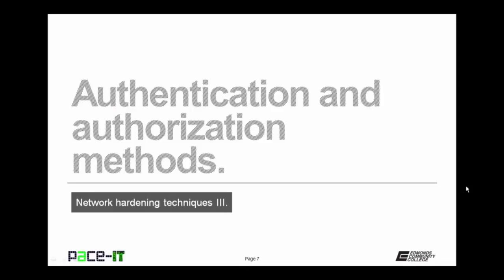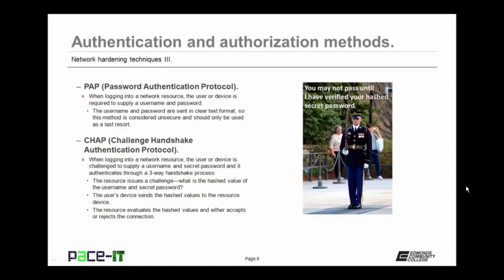Let's talk about authentication and authorization methods. The first method is PAP, Password Authentication Protocol. When logging into a network resource, the user or device is required to supply a username and password. The username and password are sent in clear text format, so this method is considered unsecure and should only be used as a last resort. More secure than PAP is CHAP, Challenge Handshake Authentication Protocol. It is similar to PAP in that the user or device is challenged to supply a username and secret password, but it authenticates through a three-way handshake process.